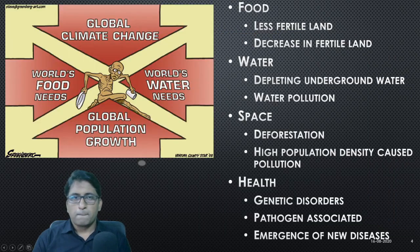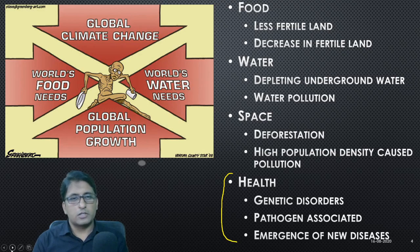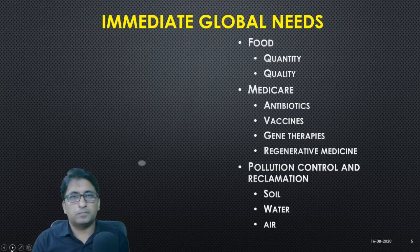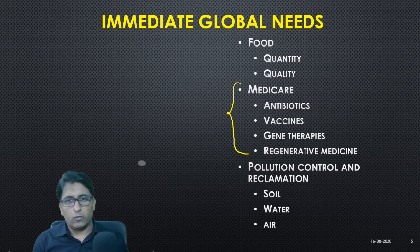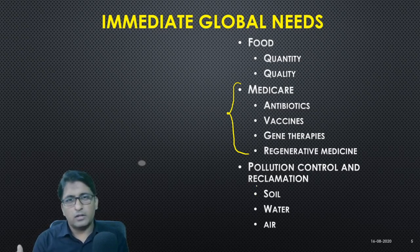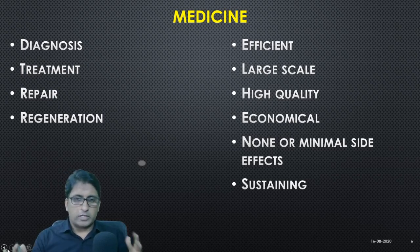There are so many problems that the human race or the earth is having with food, water, space, and health. Our concern is health — we need to address genetic disorders, pathogen-associated disorders such as infectious diseases, and the emergence of new diseases. Our immediate goals are to increase the quality and quantity of food, to provide healthcare solutions such as gene therapies, regenerative medicine, antibiotics, and vaccines, and also to reduce further pollution.